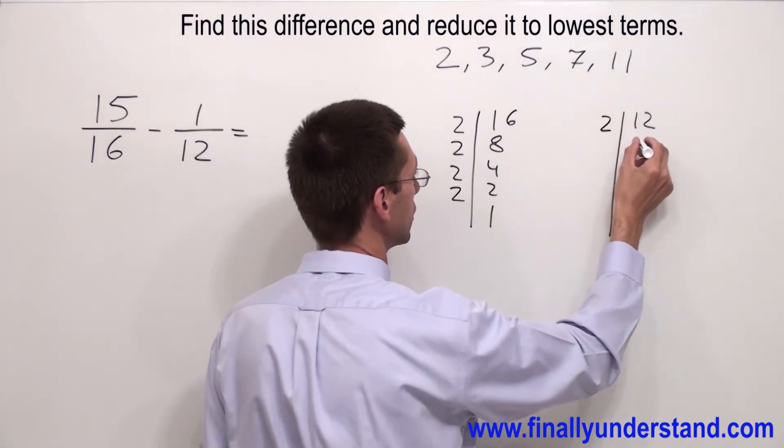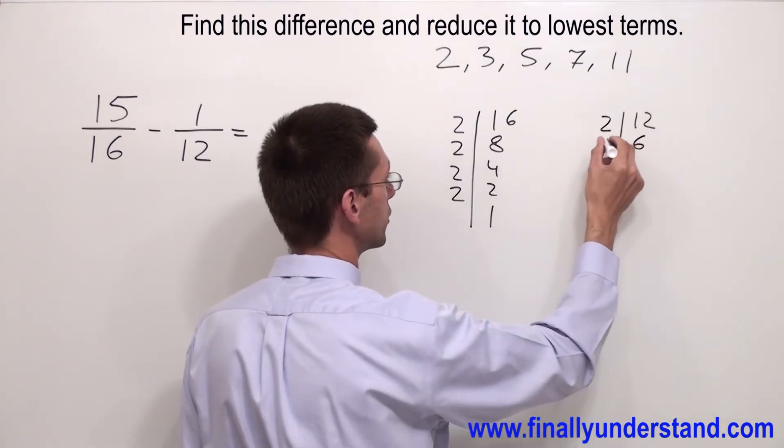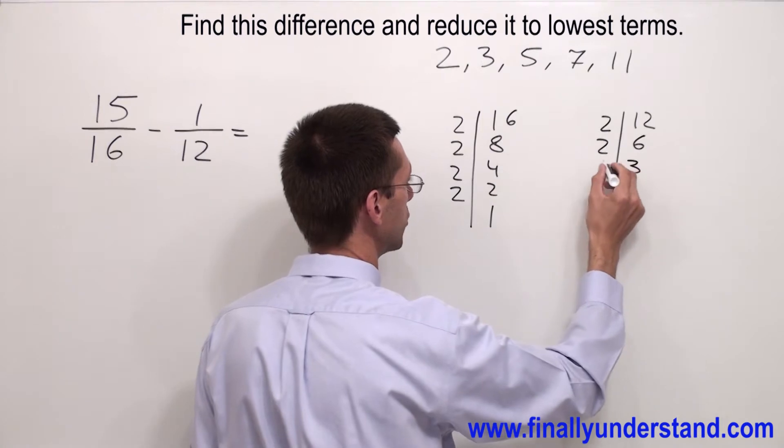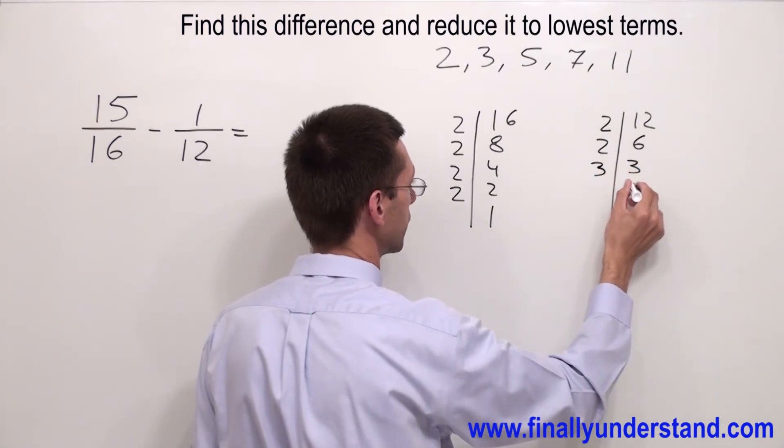Check 12. 12 is divisible by 2 gives me 6. 6 is divisible by 2 gives me 3. 3 is divisible by 3 gives me 1.